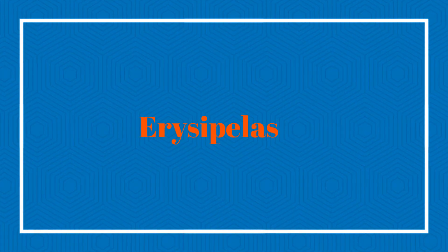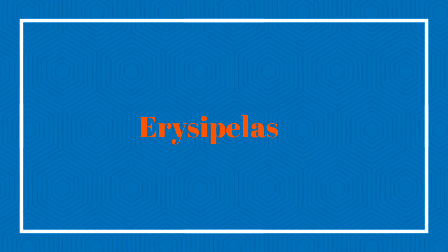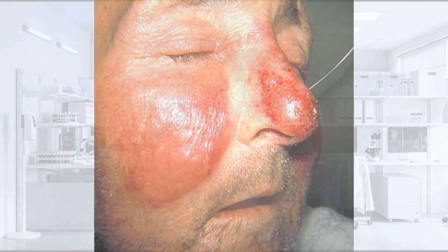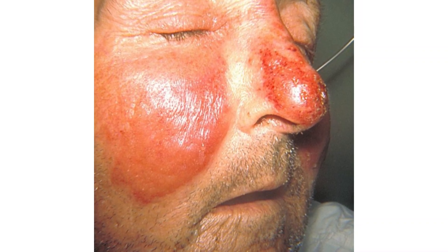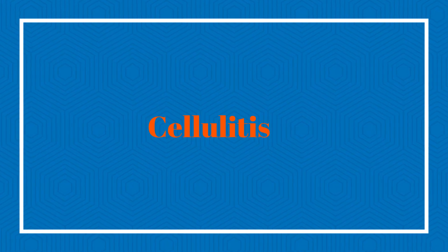Another condition that can present with a malar or butterfly rash is erysipelas, which is a superficial infection of the skin. Erysipelas will often present with systemic symptoms such as fever, chills, and malaise, and can be treated with antibiotics. Another condition is cellulitis of these areas, which usually does not present with systemic symptoms like fever or chills. The rash in cellulitis is less well-demarcated than in erysipelas, and it is an infection of the deeper structures of the skin.